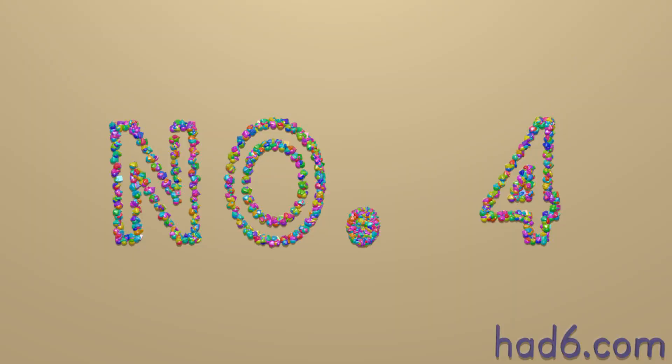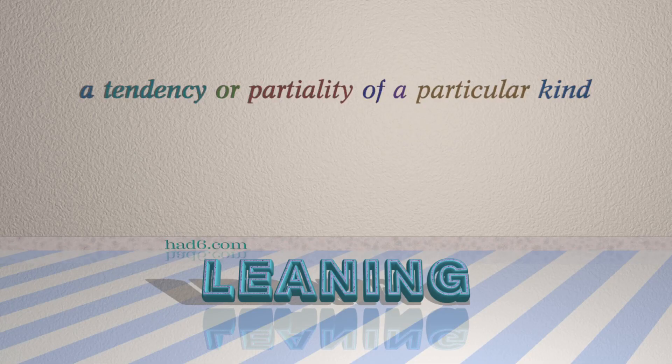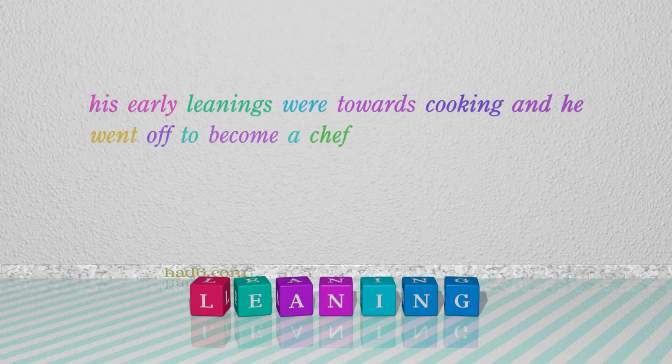Number 4: Leaning, which means a tendency or partiality of a particular kind. For example: his early leanings were towards cooking and he went off to become a chef.